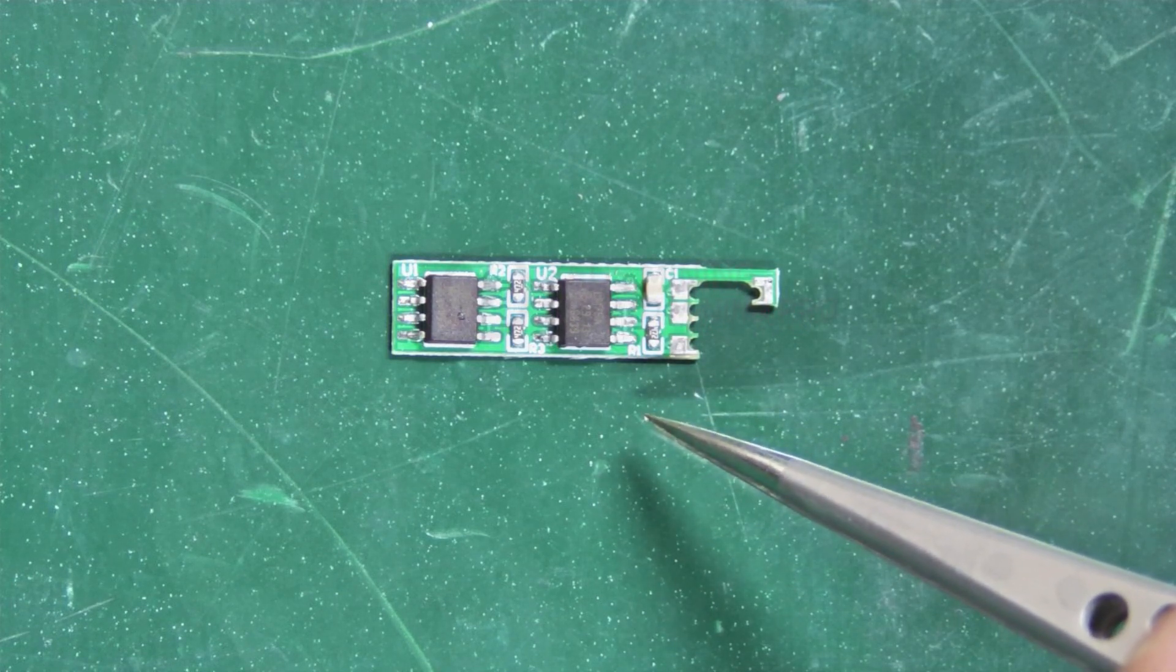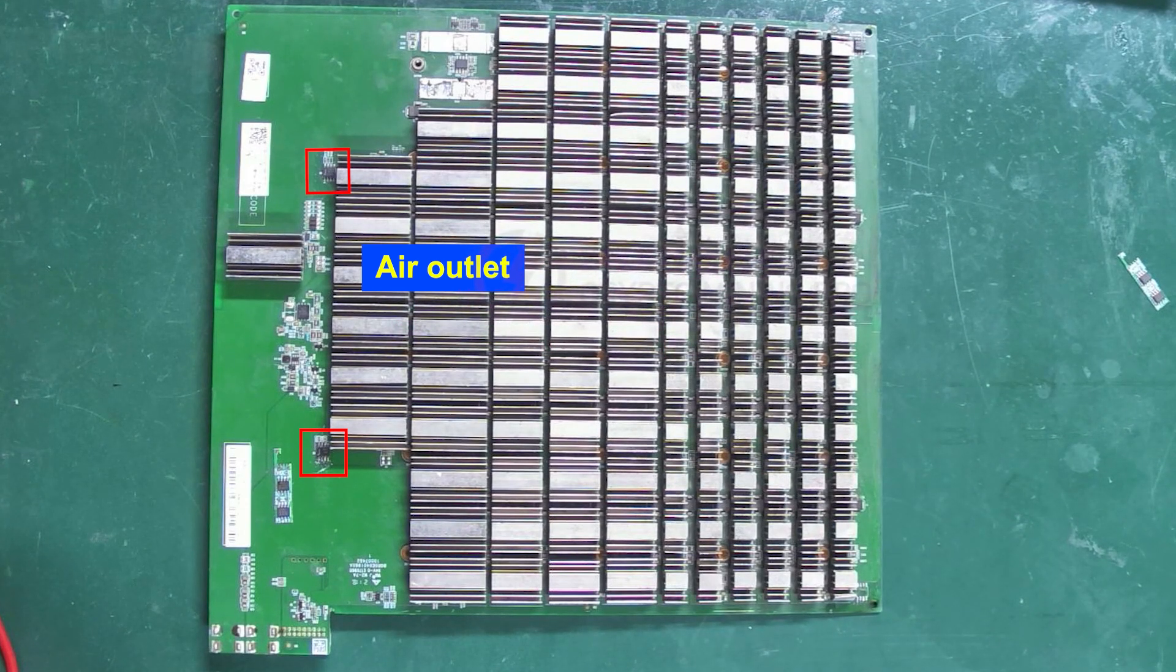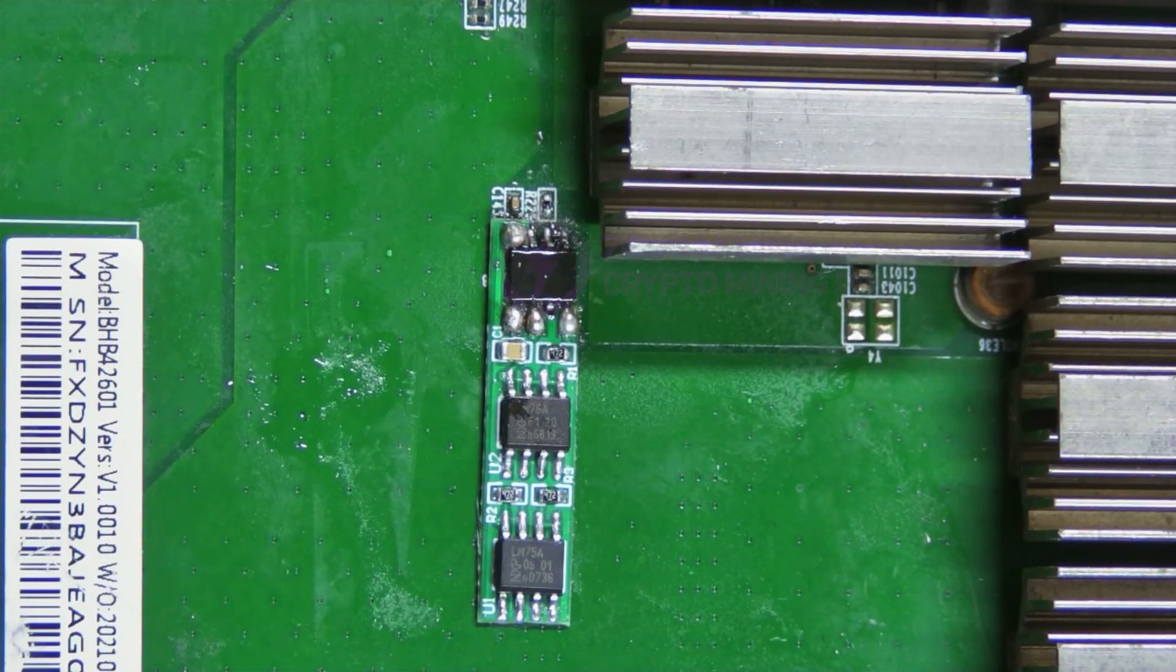Whether the chip at the air inlet or outlet is damaged, we recommend installing this module at the outlet to reduce the chance of corrosion and extend its lifespan.